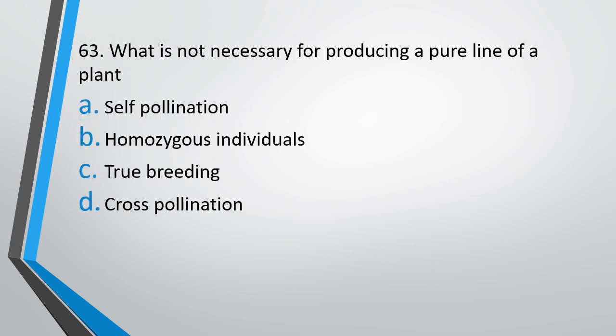Question number 63. What is not necessary for producing pure lines of a plant? Self-pollination, homozygous individuals, true breeding, or cross-pollination. The correct answer is option D. Cross-pollination is not required for pure line production.